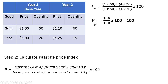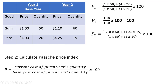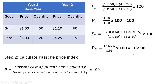So as before, in the base year the price index is normalized to 100. And now moving on to year two of the Paasche Price Index. The current cost of the current year's basket is $1.10 times 60 plus $4.25 times 19 — that's the current cost of the given year's quantity. And the base year cost of the given year's quantity is going to be $1 times 60 plus $4 times 19. And we get an answer here of 107.9.